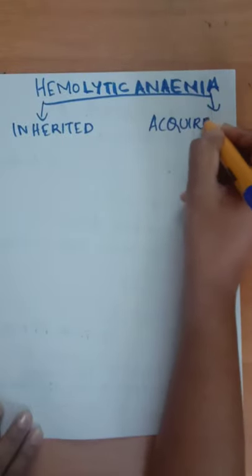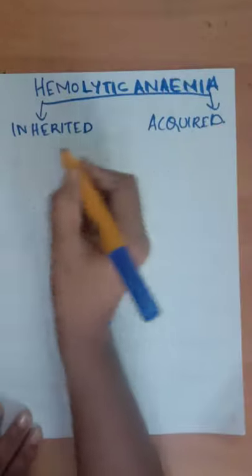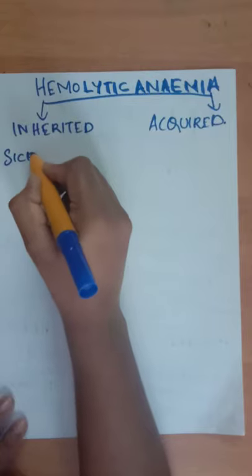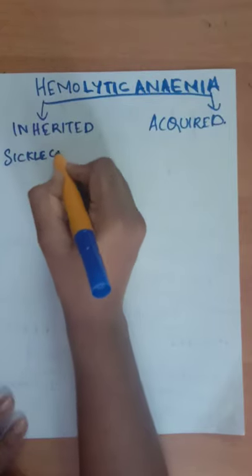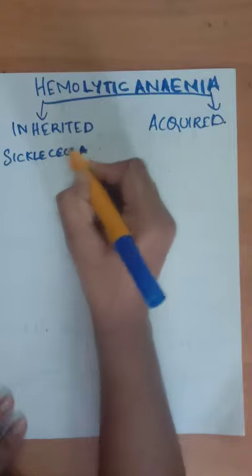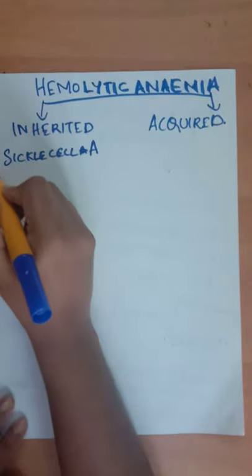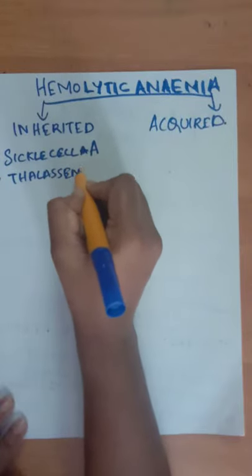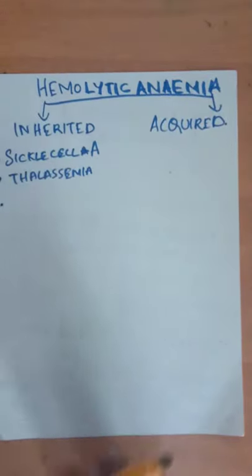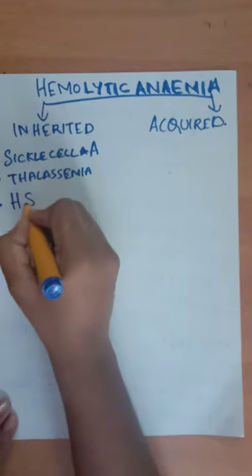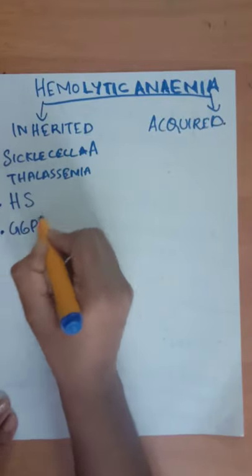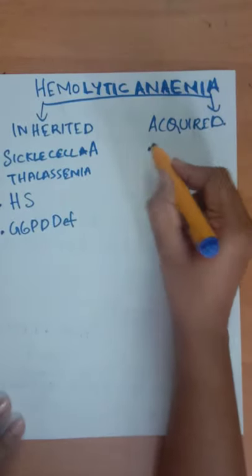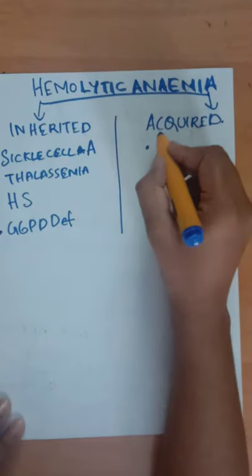Inherited causes include sickle cell anemia, thalassemia, hereditary spherocytosis, and G6PD deficiency.